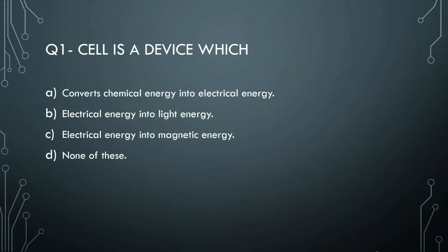The first question: a cell is a device which does what? The options are: convert chemical energy into electrical energy, convert electrical energy into light energy, convert electrical energy into magnetic energy, or none of these. The right answer is A - convert chemical energy into electrical energy. The cell is made from chemical energy.